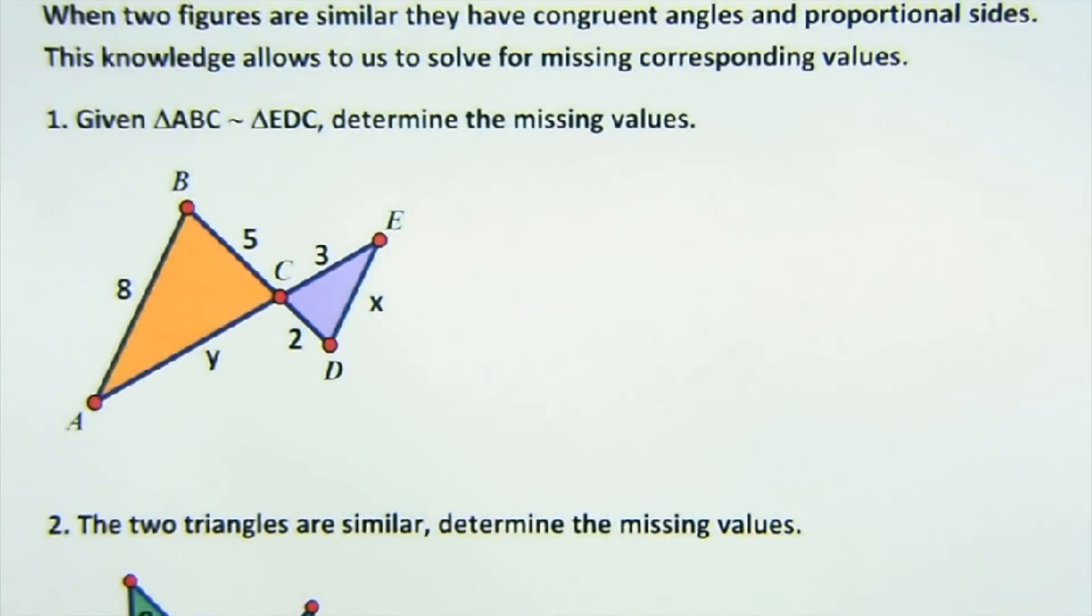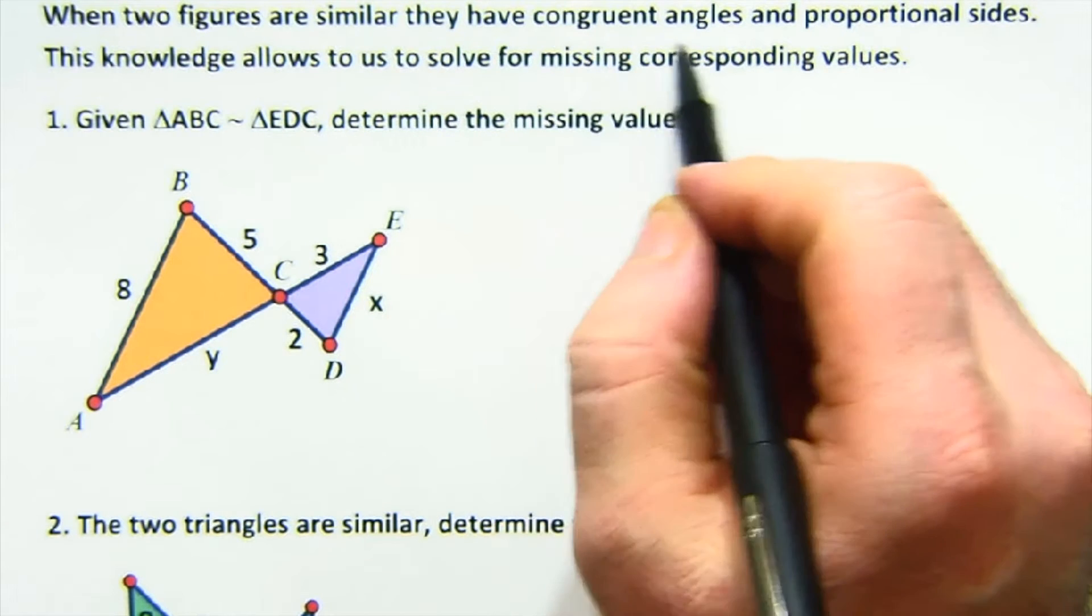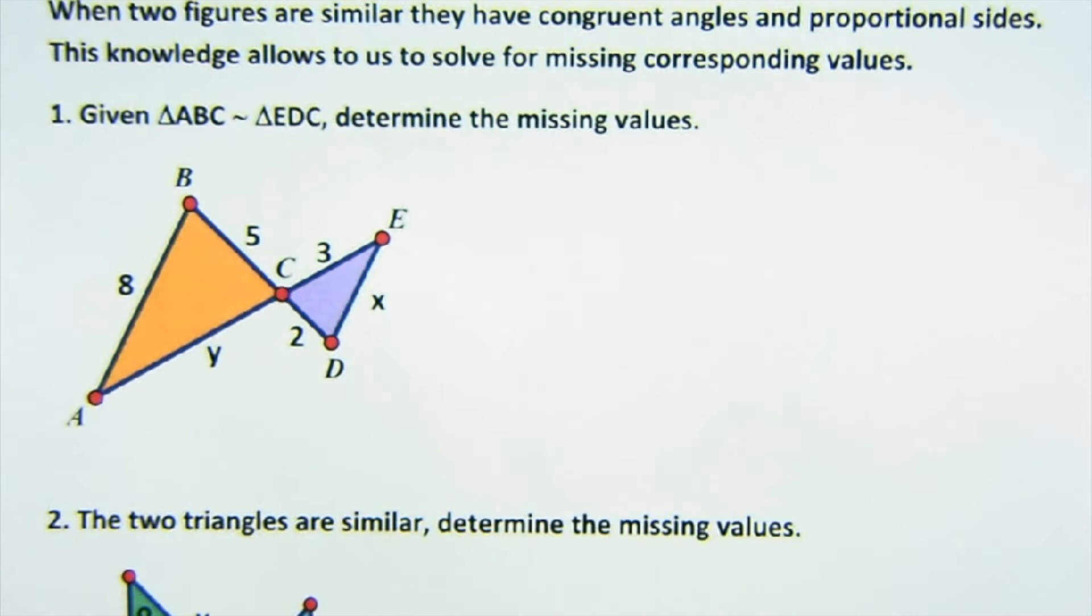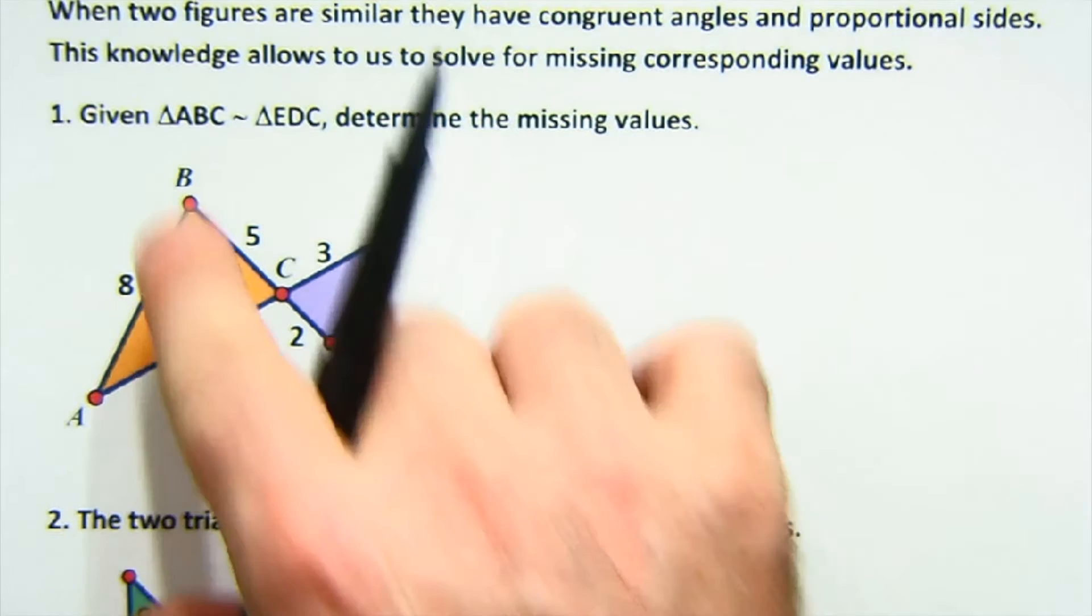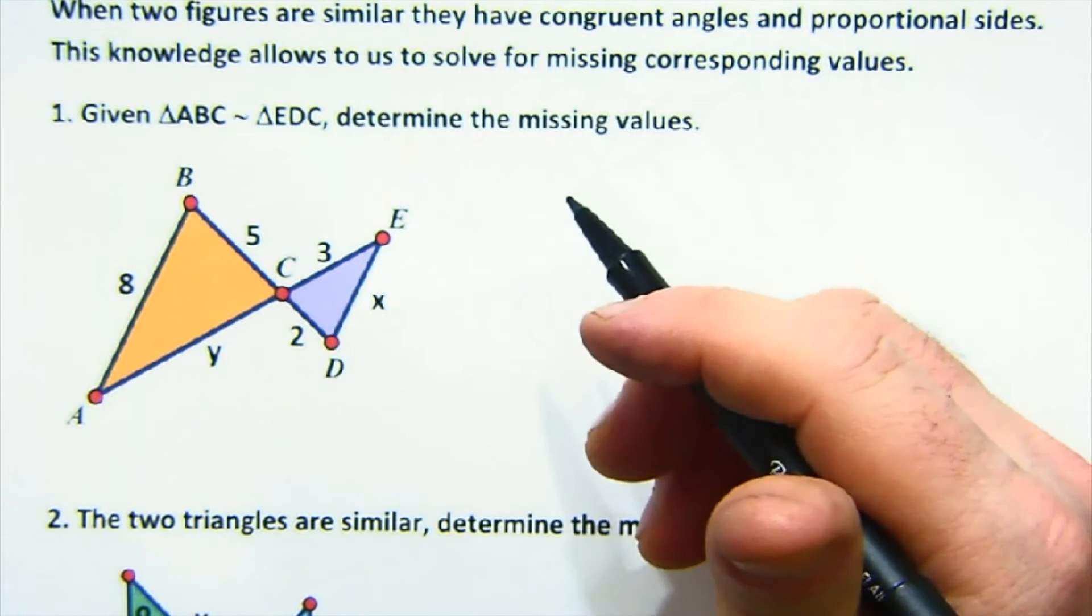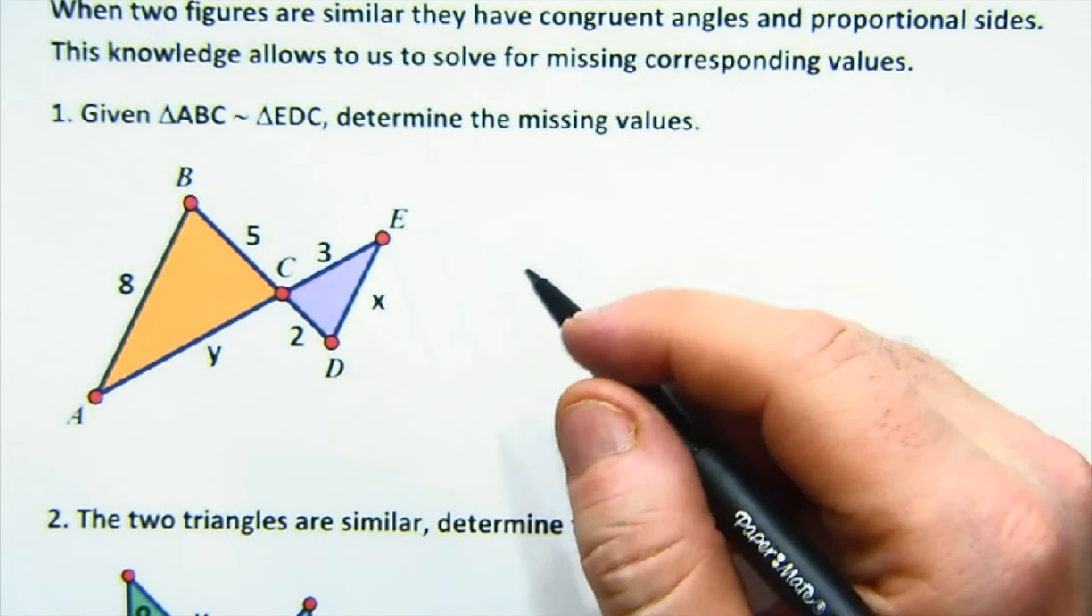Once we know things are similar, we know two things. We know they'll have congruent angles, and that their sides will be proportional. So in this case, they are actually telling us here that these guys are similar, and then want us to solve things. Now the similarity statement certainly helps us a lot to know which sides match up with which sides.